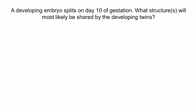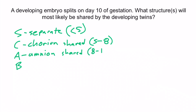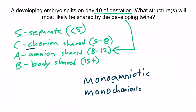Let's do a quick question to apply this. A developing embryo splits on day 10 of gestation — what structure or structures will most likely be shared by the developing twins? Using SCAB: S is separate (before day 5); C is chorion shared (days 5–8); A is amnion shared (days 8–12); B is body shared (day 13+). Day 10 falls in the A stage, so the twins will share the amnion — they will be monoamniotic. And since the chorion already developed in the previous stage, they will also share the chorion — making them monochorionic. The answer is: the amnion and the chorion.